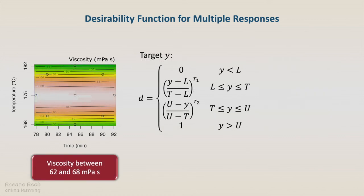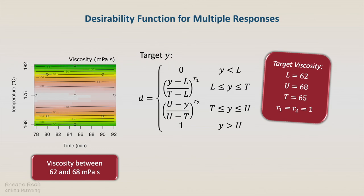The viscosity should be kept between 62 and 68 mPa second. It is clearly a case for target desirability. We will use 62 and 68 as the lower and upper limits, and the average between them, 65, as the target.